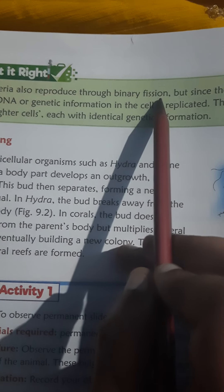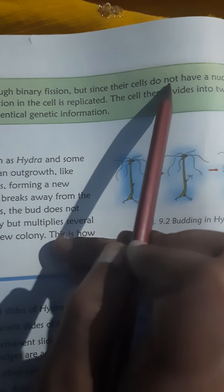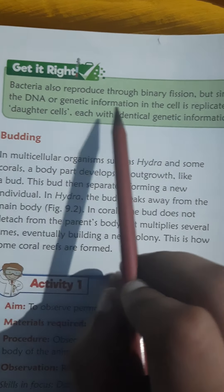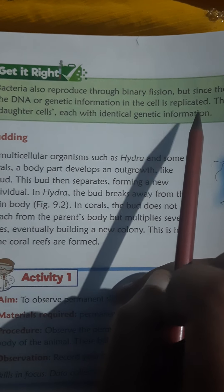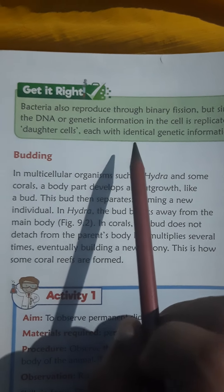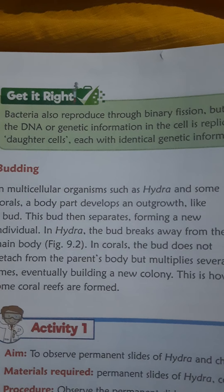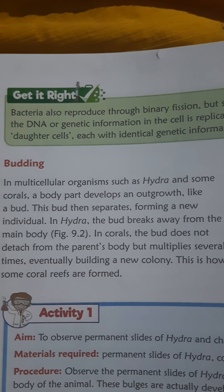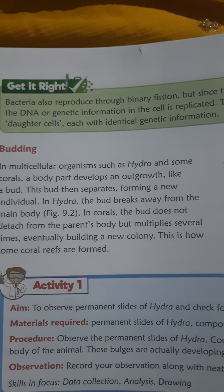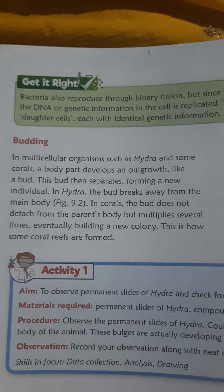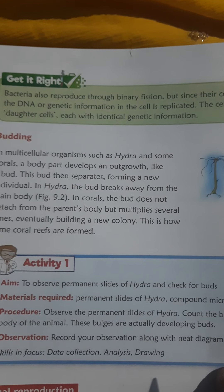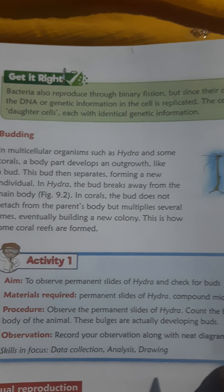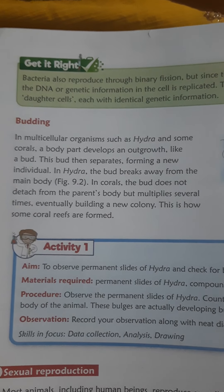Bacteria also reproduce through binary fission, but since their cells do not have a nucleus, the DNA — the genetic information in the cell — is replicated. The cell then divides into two daughter cells, each with identical genetic information. Unlike amoeba, where the nucleus divides first, in bacteria there is no nucleus, so the body divides directly into two daughter cells.